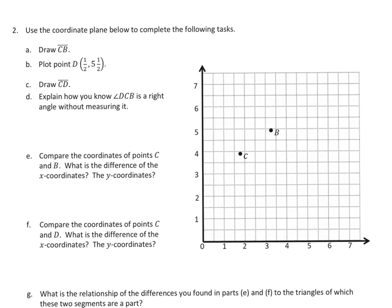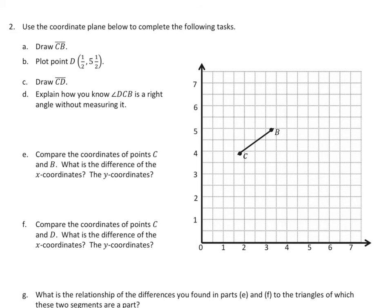So I'm gonna zoom in, and I'm gonna draw my segment CB. So I did CB. Now I gotta plot my point D. And it says 1 half and then 5 and 1 half. So here's 1 half right here, and now I gotta go up to 5 and 1 half, which is right up here on the left. So I'll plot right there, and I'm gonna label it D, and I see I gotta draw CD now. So I gotta connect those to make a segment. So there's my segment CD.